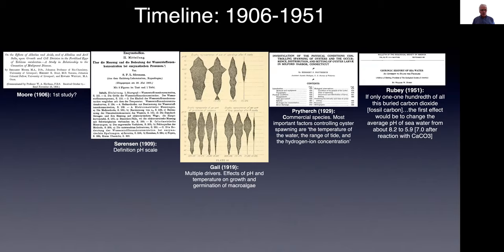The impacts of ocean pH on organisms started quite early. The first paper we could find, between Hanson, the co-editor of this book on ocean acidification, is a paper by Moore in 1906 on the effects of acids and alkalis on the growth of sea urchins. This paper of 1906 predates the definition of the pH scale by Sorensen, which only took place three years later in 1909.